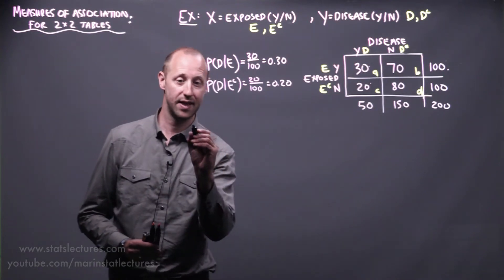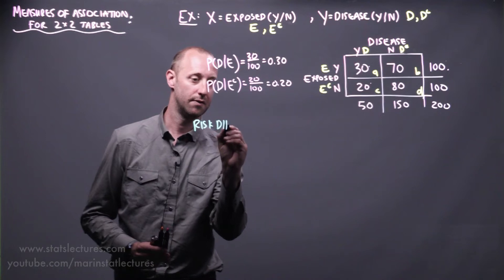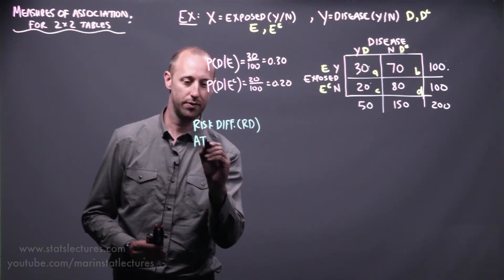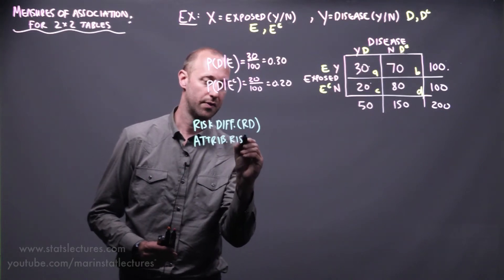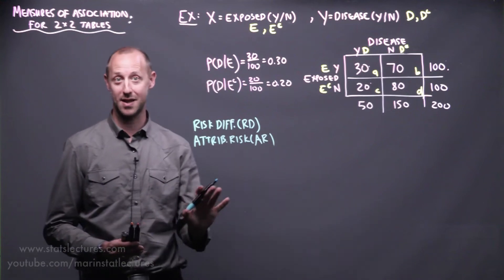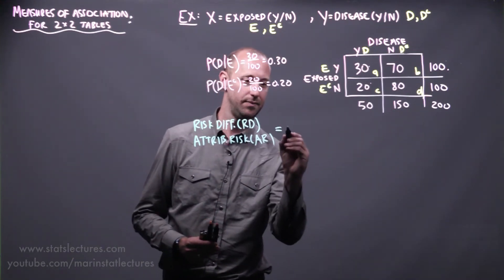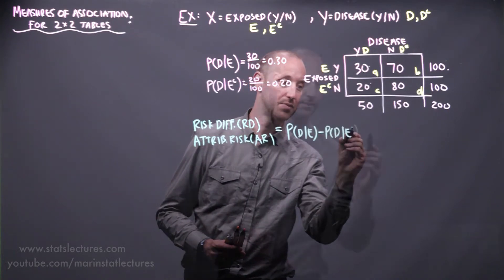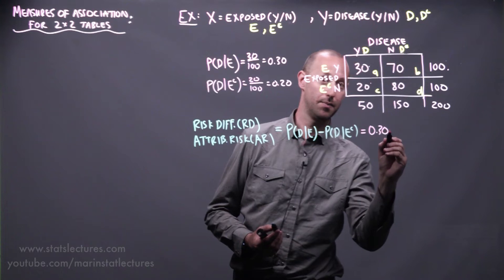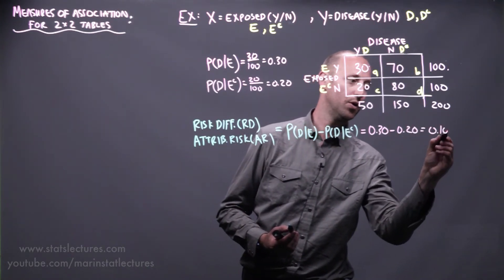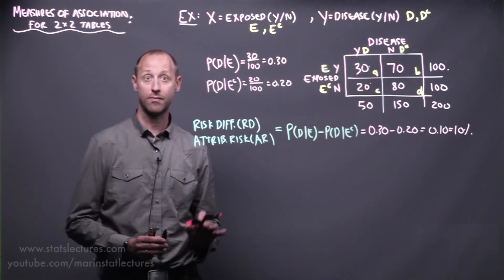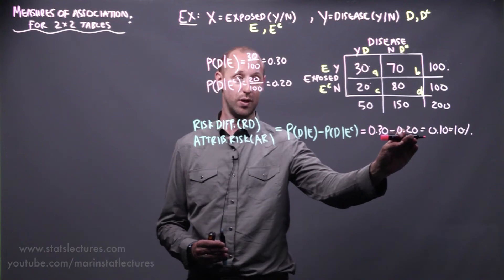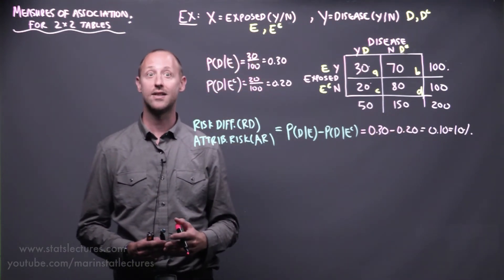So the first thing we can think about is getting at the risk difference, abbreviated RD, or sometimes called the attributable risk AR. These are the exact same concepts, just two different names. This is looking at what's the probability of disease given someone is exposed minus the probability of the disease given they're not exposed. In our example, that's the 30% or the 0.3 minus the 20% or 0.2, which is 0.10 or 10%. We can think of this on an additive scale. Being exposed to the risk factor increases your risk of disease by 10%. The risk goes from 20% up to 30% or it increases by 10%.